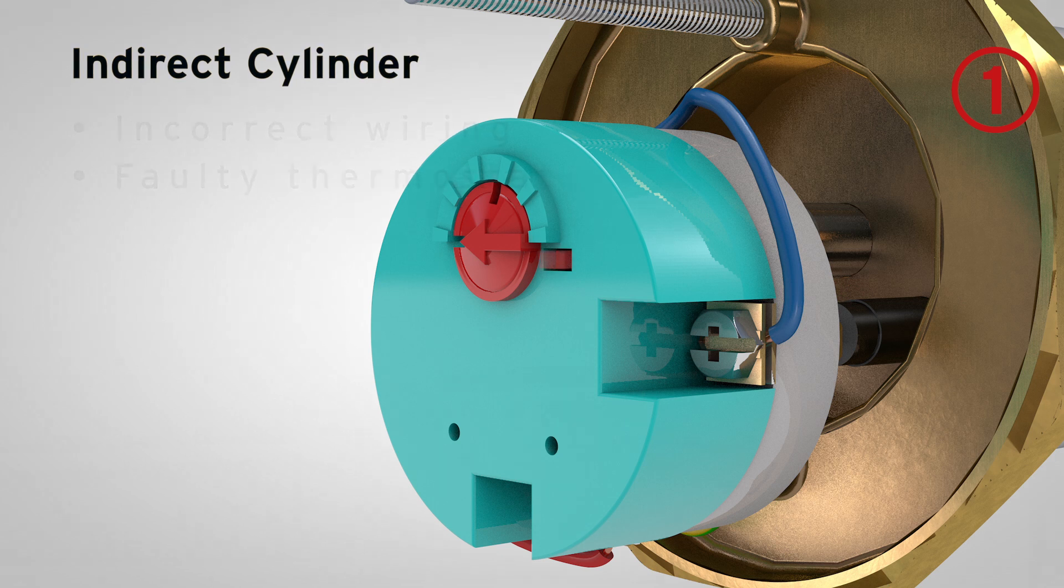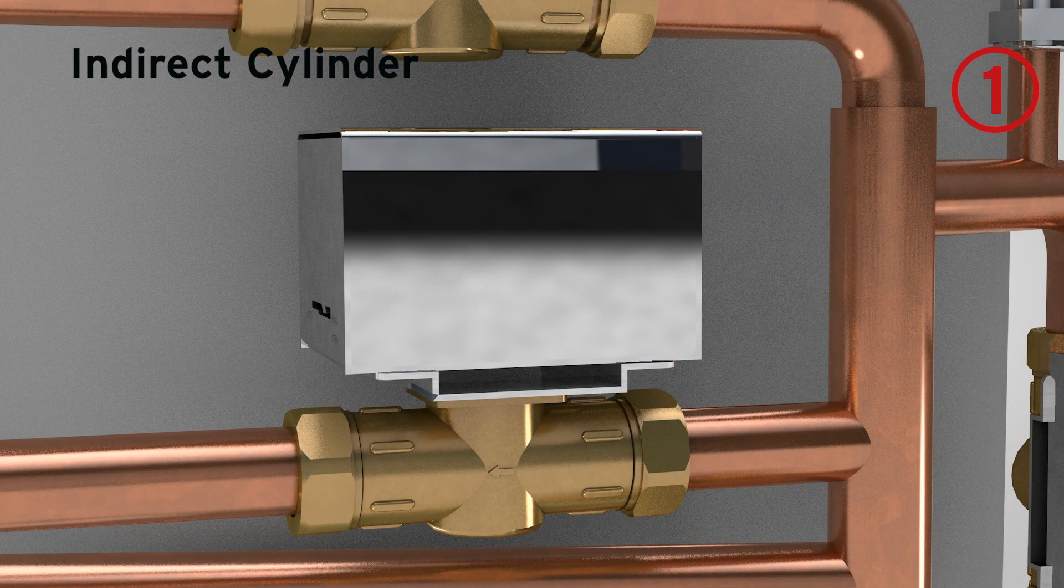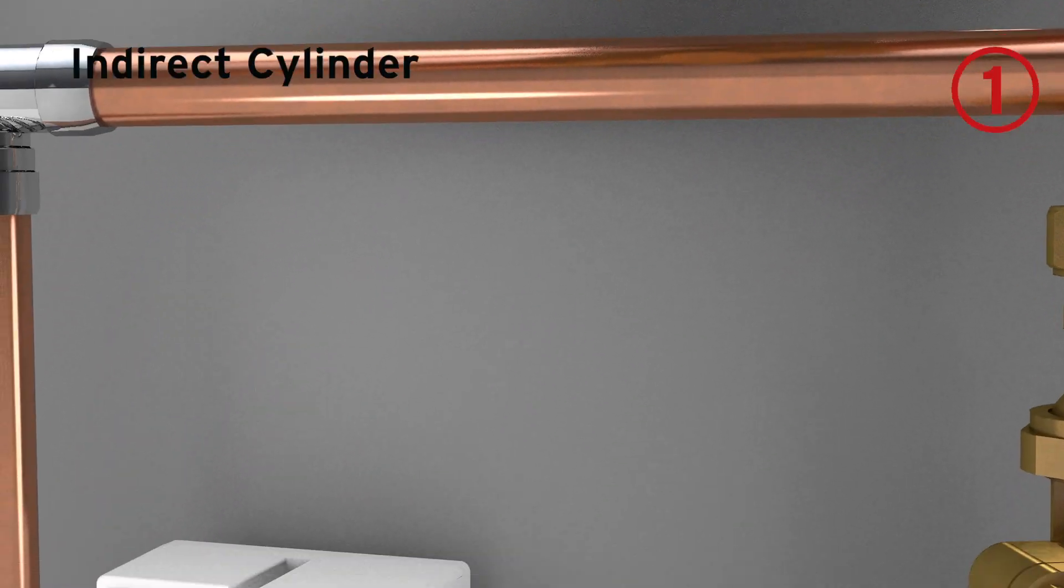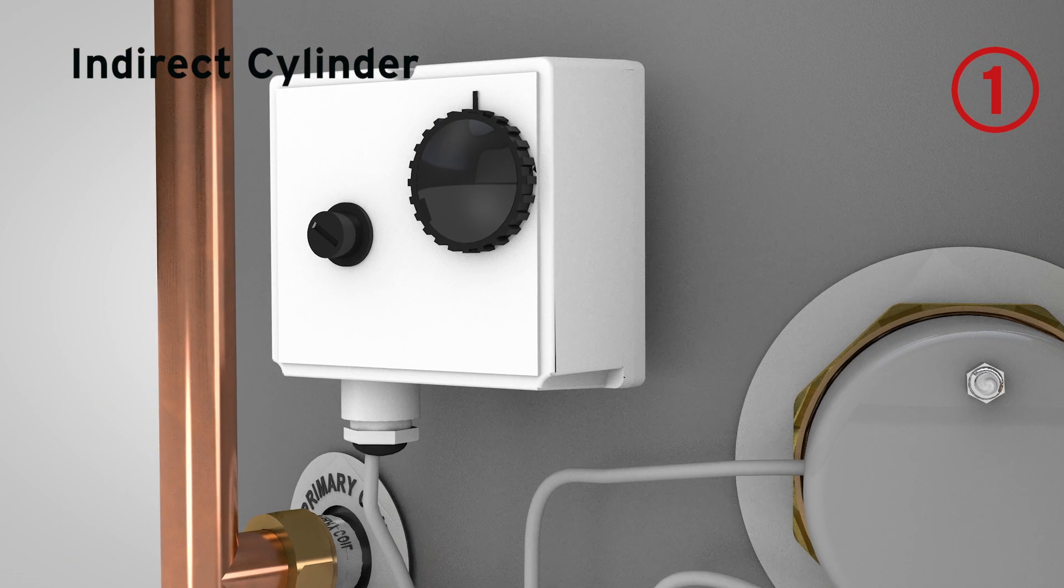On an indirect cylinder, you will need to check the two port valve, as it may be jammed open or the actuator failed, causing the cylinder to overheat. Or, the control thermostat to the boiler may have failed.